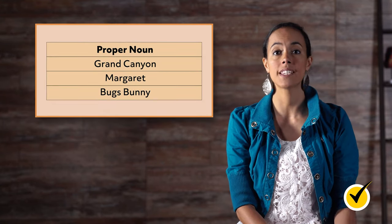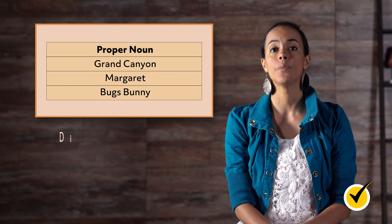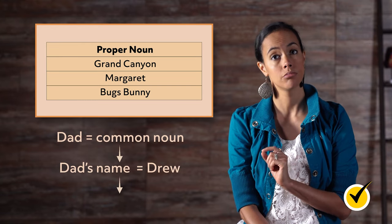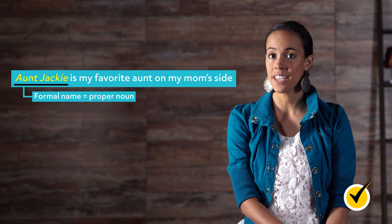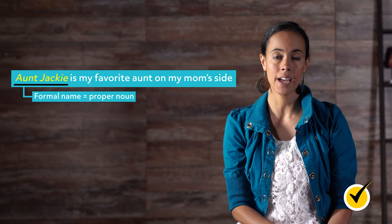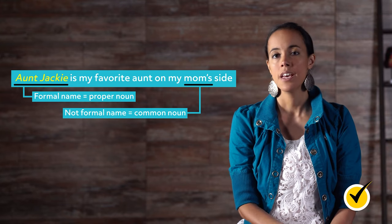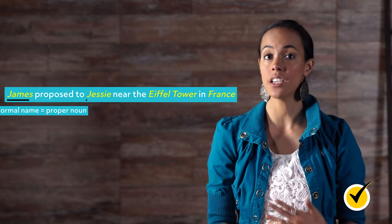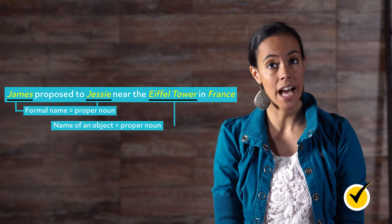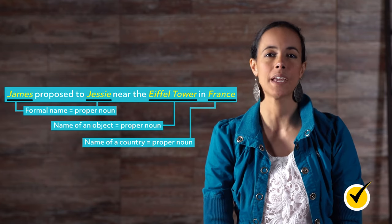Proper nouns are people, places, or things that have specific names or titles. For example, dad is a common noun, but your dad's name might be Drew — Drew is a proper noun. A Chevy is the name for a brand of car, so it's also a proper noun. Proper nouns are always capitalized. Here's an example: Aunt Jackie is my favorite aunt on my mom's side. Aunt Jackie is a proper noun, while mom is just a common noun. Another example: James proposed to Jesse near the Eiffel Tower in France — James, Jesse, the Eiffel Tower, and France are all proper nouns.